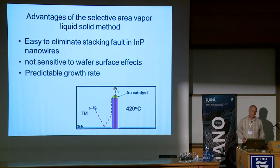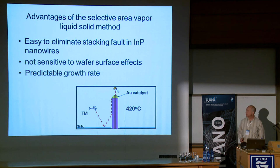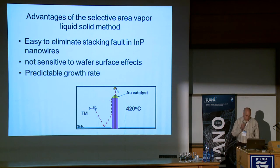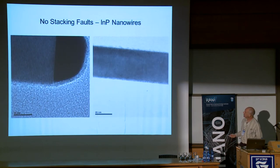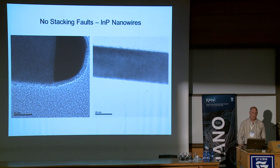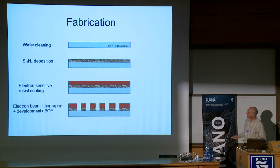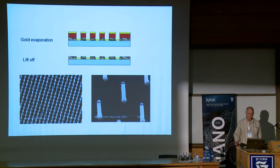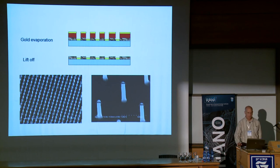The advantages of this selective area method: we found it's very easy to eliminate the stacking faults in indium phosphide nanowires. We don't understand why, but it happened and we are very happy about that. It's not sensitive to wafer surface effects, and the growth rate is highly predictable. Here we can see again no stacking faults in this indium phosphide nanowire grown by the selective area VLS method. The fabrication process includes wafer cleaning, silicon nitride deposition, e-beam lithography, and then deposition of gold into the holes. And these are the results of the nanowires which are grown.